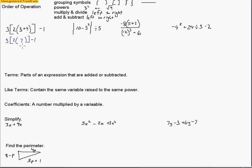Now I'll go ahead and work inside these brackets. The parentheses there symbolizes that I'm multiplying by that 2. When I multiply by that 2, that gives me 14. I've changed the grouping symbol from the bracket to parentheses just because it's easier to draw — it doesn't matter at this point. From here we just multiply: 3 times 14 gives us 42. Then we subtract 1 to give us 41. There's our first answer.